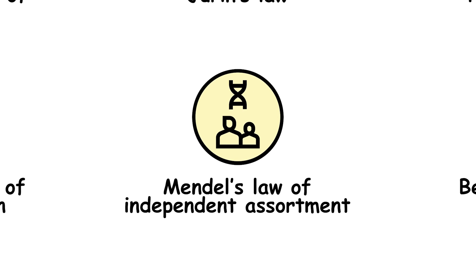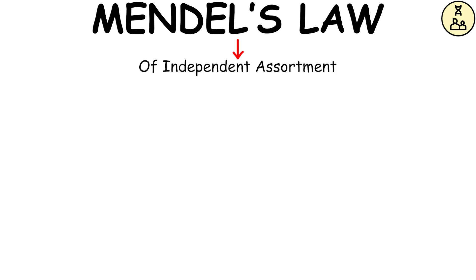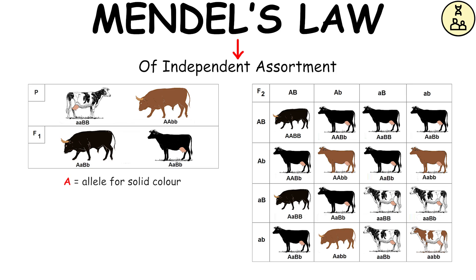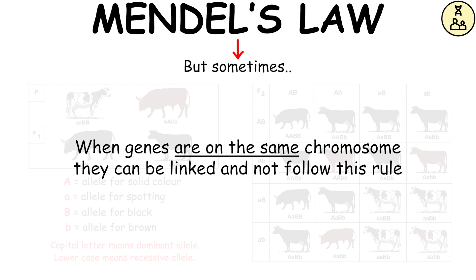Mendel's Law of Independent Assortment says that different traits separate and are passed down independently in the next generations. This idea was checked with chromosomes, but sometimes, when genes are on the same chromosome, they can be linked and not follow this rule.